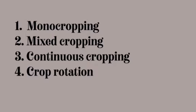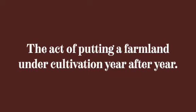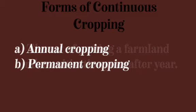These four methods or types of crop production are the fundamental ones carried out among farmers in our country. Continuous cropping is the act of putting a farmland under cultivation year after year — that is, the farmer continually cultivates a farmland, growing crops on it this year, and again the next year. There are two forms of continuous cropping.